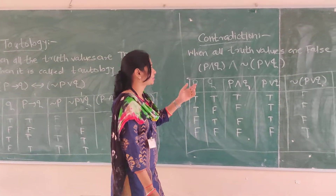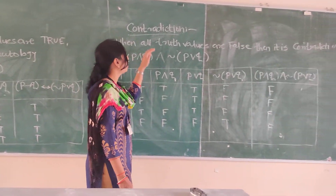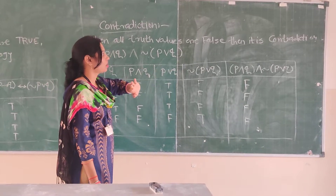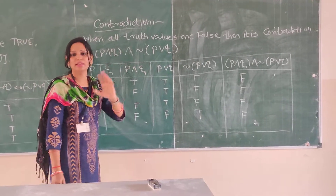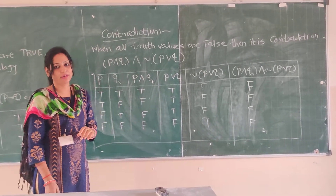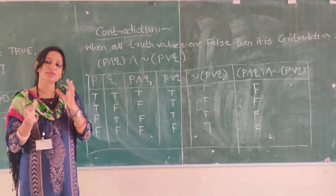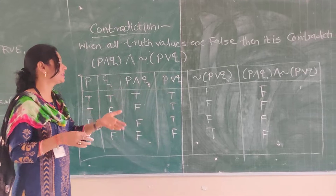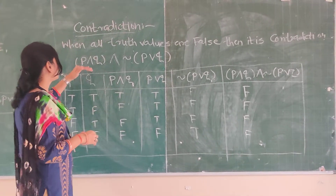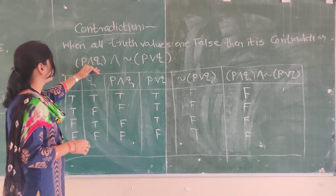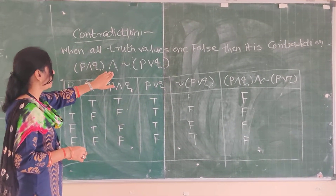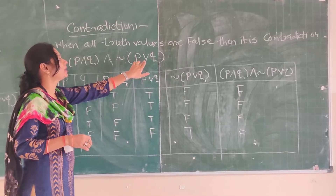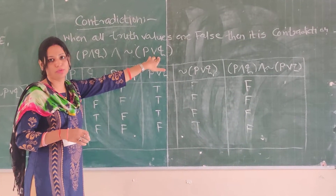In contradiction, when all the truth values are false, it is called contradiction. The process is the same — we will see that using p and q and negation of p or q.